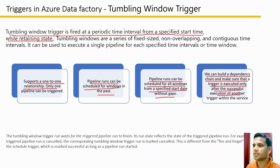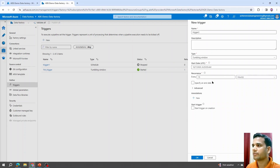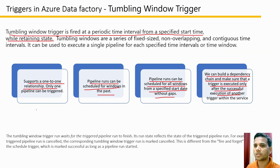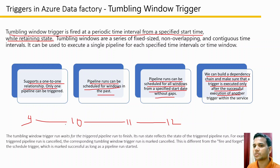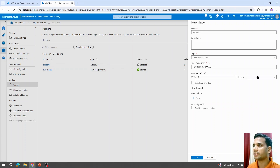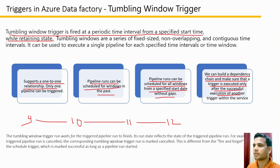For the no-gaps feature: if we set up this pipeline to run every one hour, it will create windows like 9 to 10, then automatically 10 to 11, then 11 to 12 — it will not miss or create any gap between time slots. It will run at each window until the specified end time, which you can set using the 'Specify End Time' option.